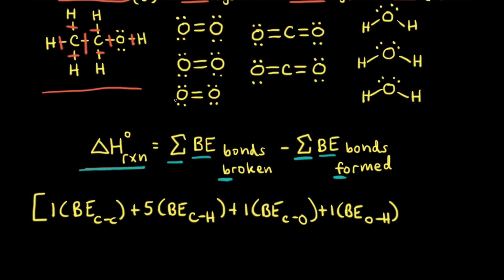In the balanced equation, one mole of ethanol reacts with three moles of oxygen gas. To represent the three moles of oxygen gas, I've drawn three molecules of O2. In each molecule of O2 there is an oxygen-oxygen double bond, so we would need to break three oxygen-oxygen double bonds. We add three times the bond enthalpy of an oxygen-oxygen double bond, which gives us the sum of the bond enthalpies for all the bonds that need to be broken.